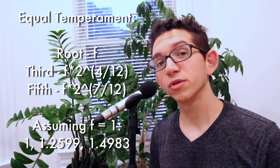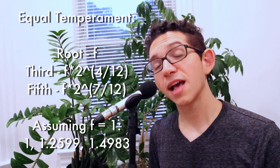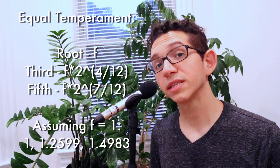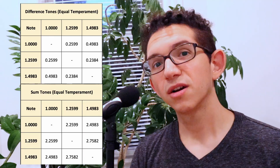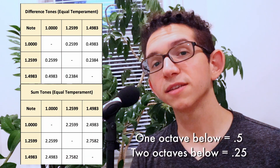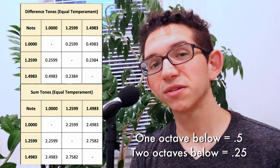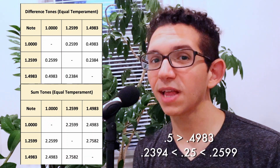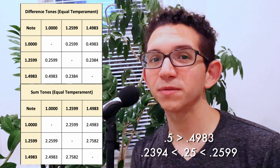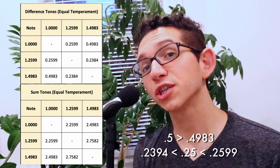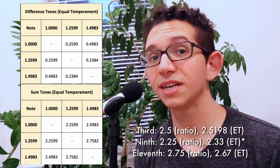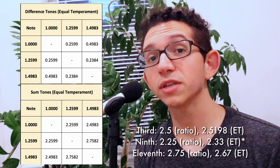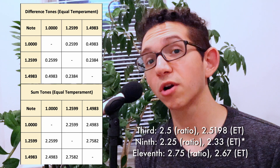In our first chord, our root is at f, our third is at f times 2 to the 4 over 12, and our fifth is at f times 2 to the 7 over 12. So let's see what our combination tones look like. Our difference tones are almost one octave and two octaves beneath our fundamental, but one octave beneath is flat, and two octaves beneath is split between a flat and a sharp difference tone. Our sum tones are almost equivalent to a third and ninth and an eleventh, but our third is flat, and our ninth and eleventh are sharp.